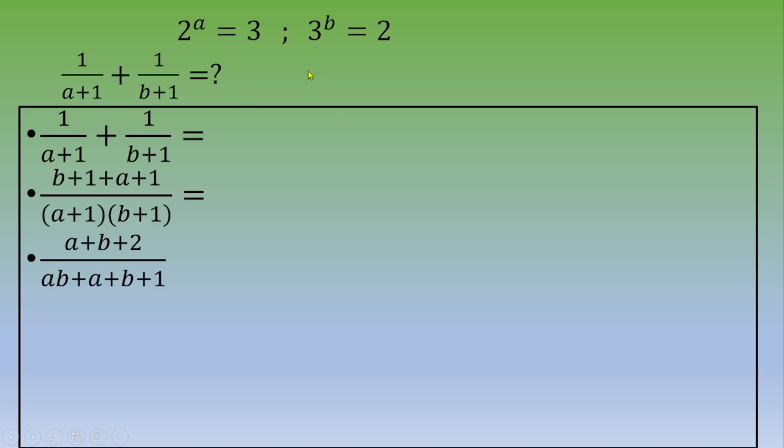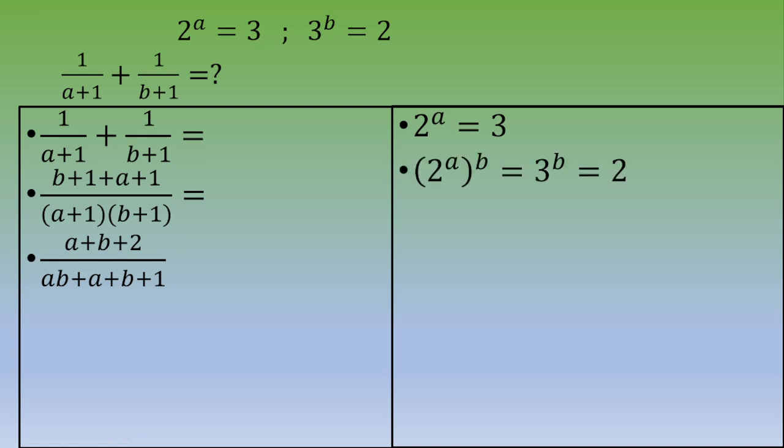So now let's take care about this: 2 to the power a equals 3. You notice that you've got a 3, and then you've got another one, 3 to the power b equals 2. So the idea is to raise both quantities to the power b. Let's do that.